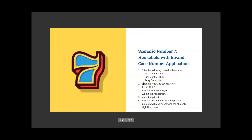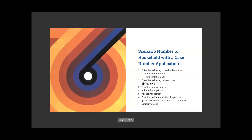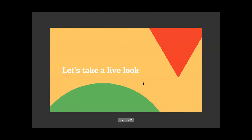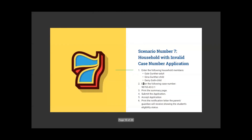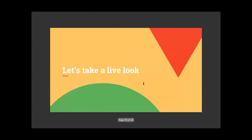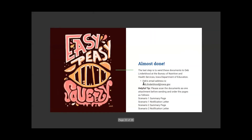There is one more scenario — scenario seven. Another case number. The only difference I saw between six and seven is that six had one adult and one child, and seven has one adult and two children, with a different case number.